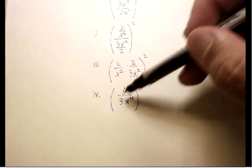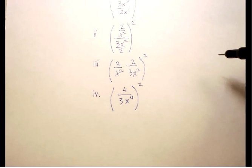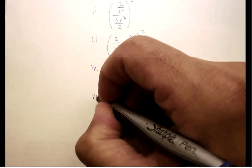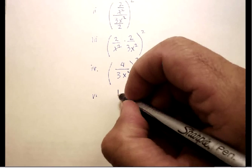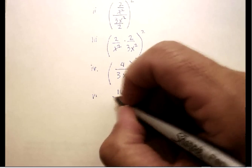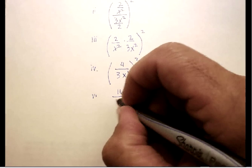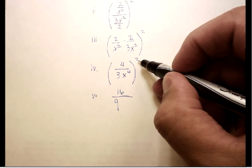It doesn't look like there's anything more I can do inside the parentheses, so now I can move to the exponent part of PEMDAS. I can square the 4 and get 16. I can square the 3 and get 9. And I can raise this exponent to this exponent by multiplying them—that's the power rule.